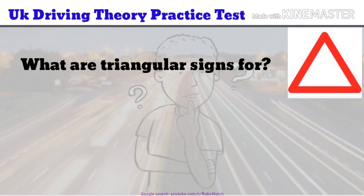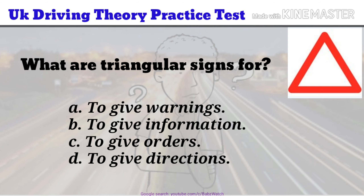UK Driving Theory Practice Test Question 2 of 50. What are triangular signs for? a. To give warnings. b. To give information. c. To give orders. d. To give directions. The correct answer is a.